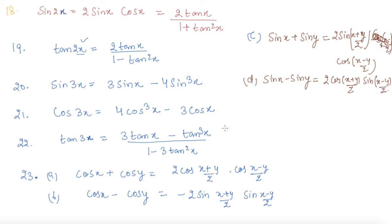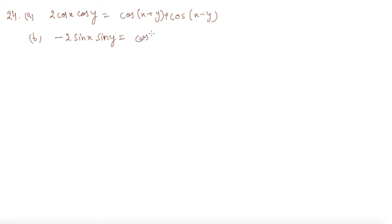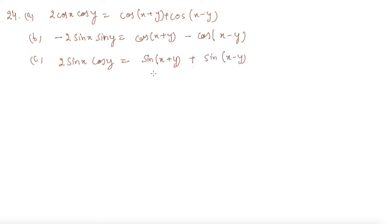Formula 24 gives product-to-sum formulas: (a) 2cos x · cos y = cos(x+y) + cos(x-y). (b) -2sin x · sin y, which is the inverse of formulas discussed earlier. (c) 2sin x · cos y. You should learn all these formulas by heart because they will be used directly in subsequent lectures.